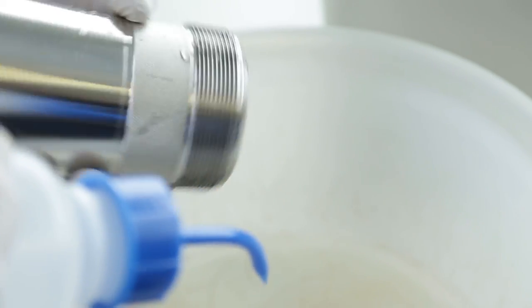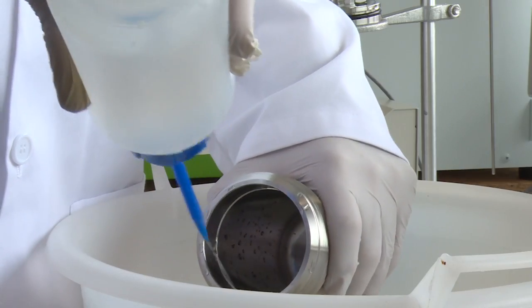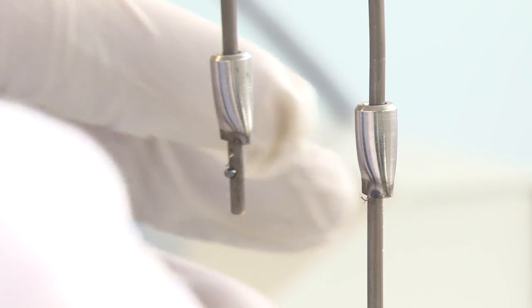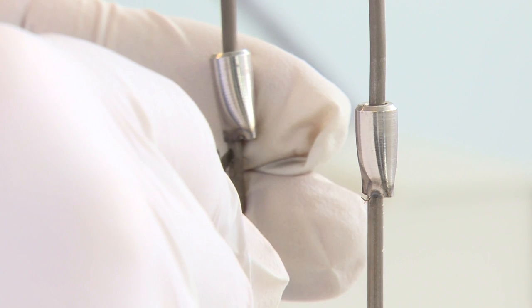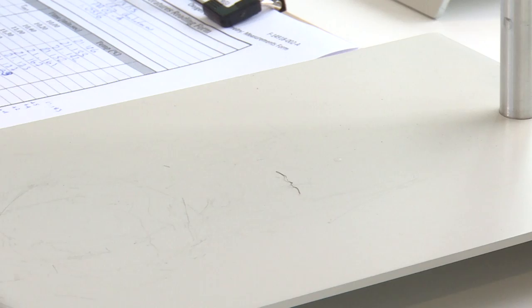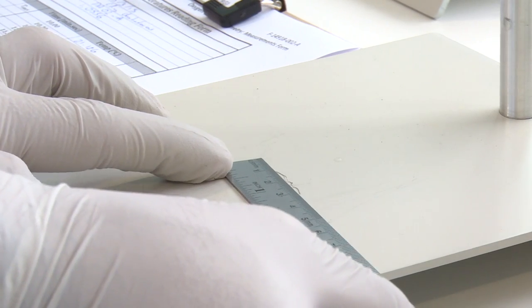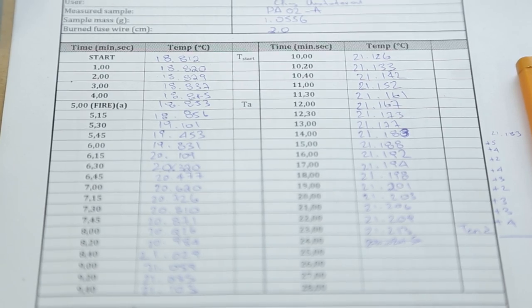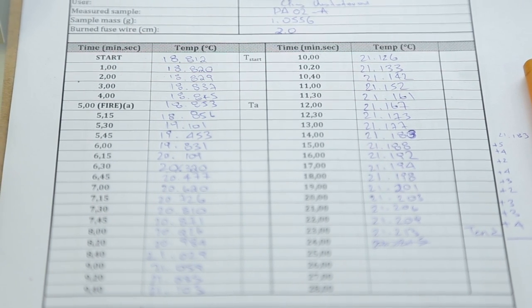Wash all interior surfaces of the bomb with a jet of distilled water and collect the washings in a beaker. Remove all unburned pieces of fuse wire from the bomb electrodes. Straighten them and measure their combined length in centimeters. Subtract this length from the initial length of 10 centimeters and enter this quantity on the data sheet as the net amount of wire burned.